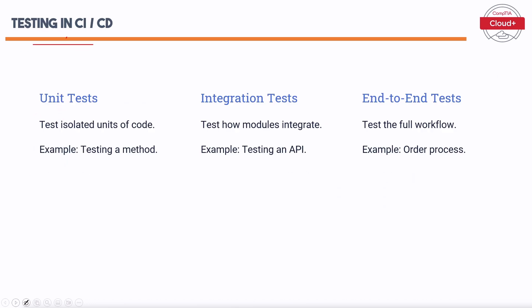Testing is a critical component of the CI-CD pipeline, ensuring software meets quality standards. The main types of tests are: Unit Tests — testing isolated units of code to verify individual component correctness. Integration Tests — testing how modules integrate, checking interactions between different components. End-to-End Tests — testing the full workflow by simulating real-world user scenarios, validating the complete functionality of the application.